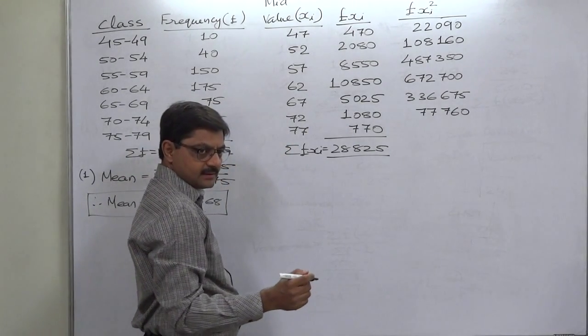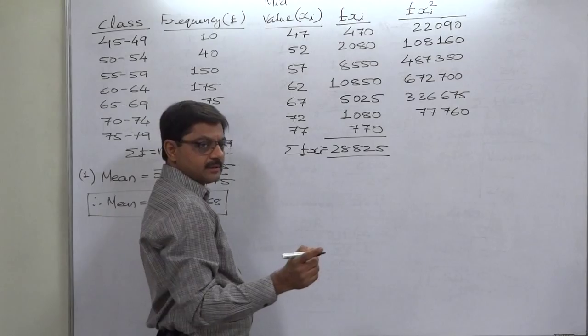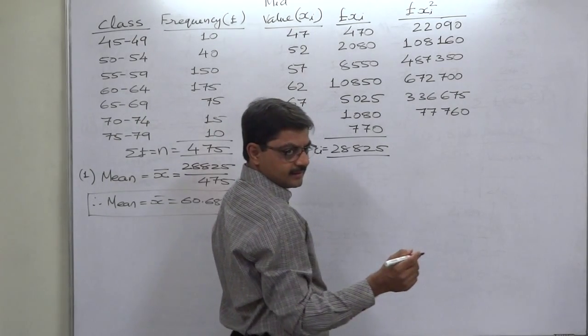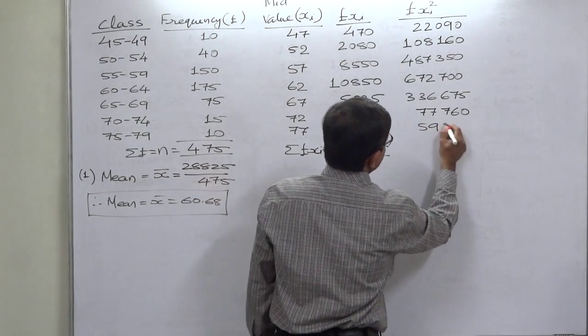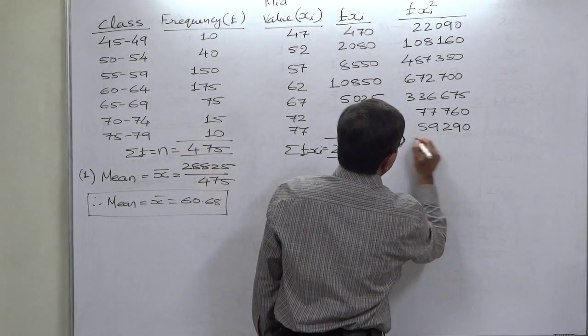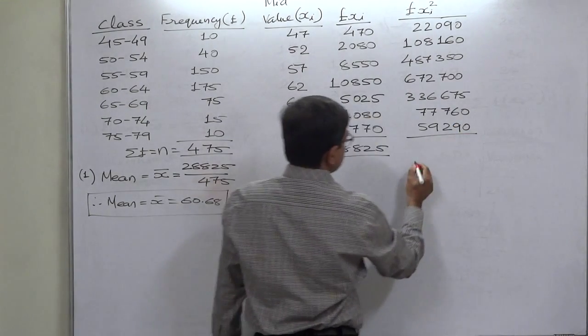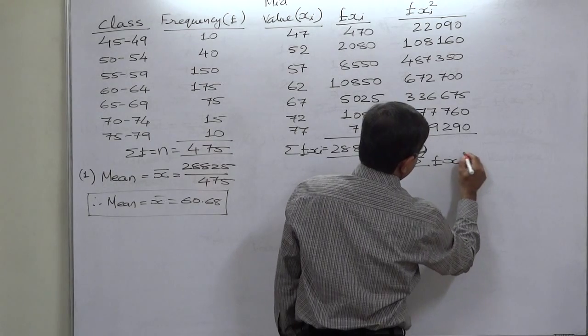77 multiplied by 770, 59,290. Now the sum of this value, sigma fx square.